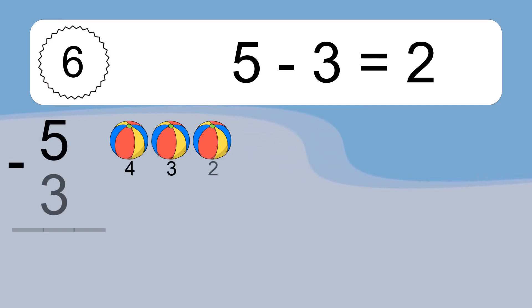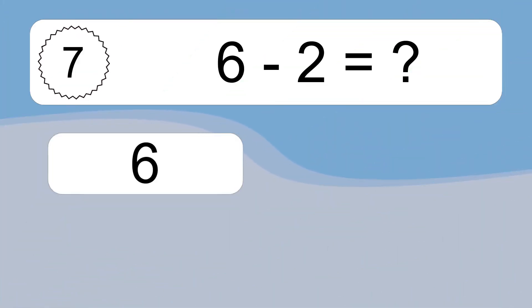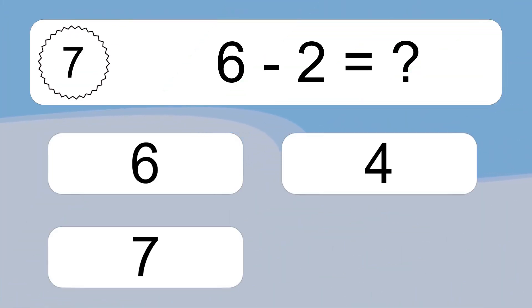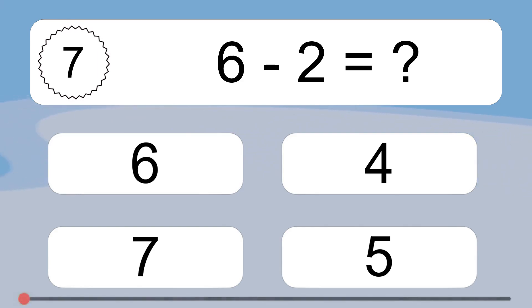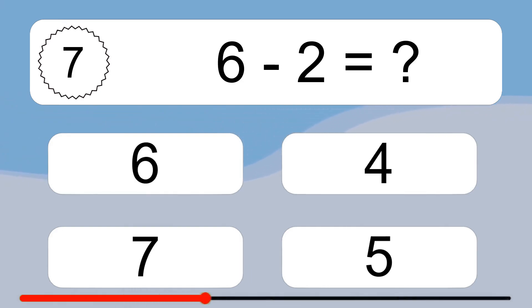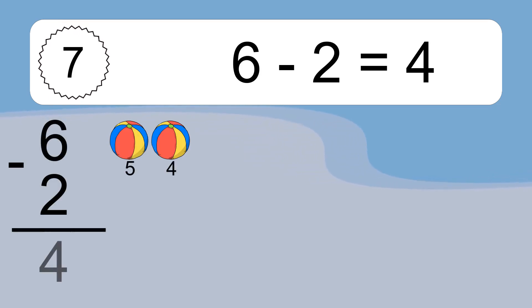5 minus 3 equals what? 5 minus 3 equals 2. Let's count it: 4, 3, 2. 6 minus 2 equals what? 6 minus 2 equals 4.